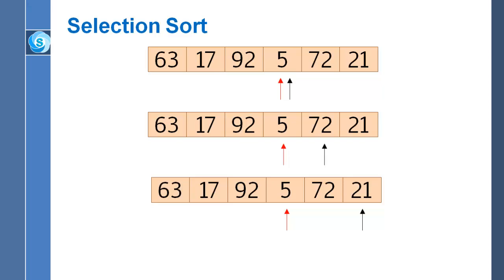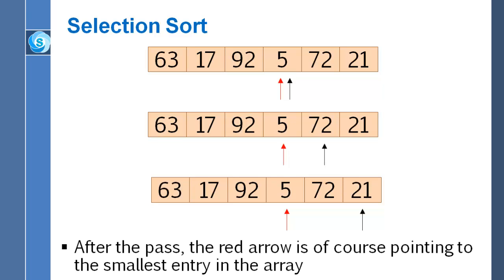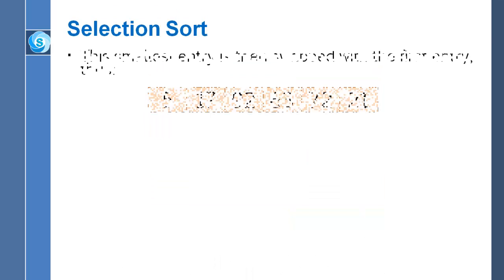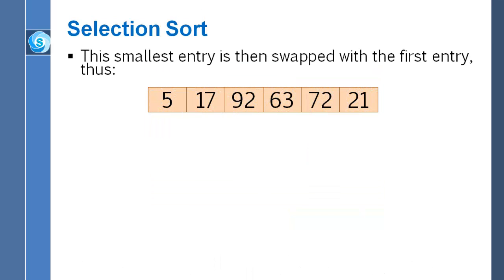By the time we've made that complete pass through the array, the red arrow is, of course, pointing to the smallest entry in the array as required. Once we're done with this pass and we know where the smallest entry is, then it's a simple matter to swap that entry with the first entry in the array. 5 and 63 have traded places. We now have the number 5 at the beginning of the array where it belongs.